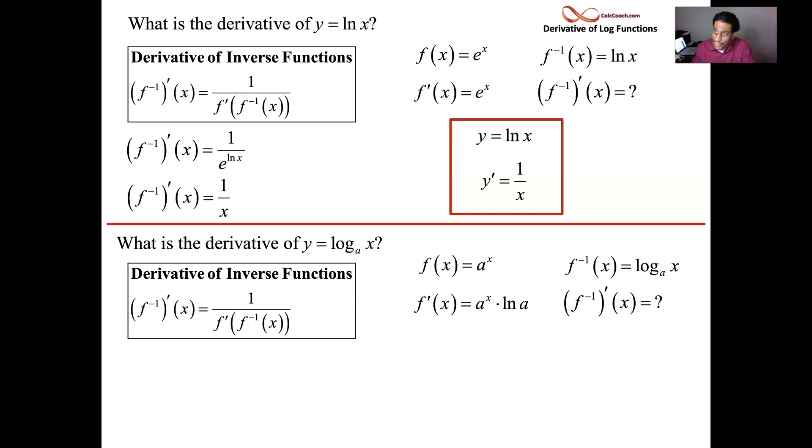Take that f prime, rip the x out, and put the log base a of x in its place. The inverse function in its place. And these guys cancel, just like e and log cancel.